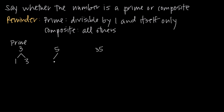What about 5? Well, we know 1 goes into 5 evenly — 1 will always go into every number evenly. We also know that 5 will go into 5 evenly, since the number itself always goes in evenly. But any numbers greater than 5 will always give a decimal answer, and trying to divide 5 by any number between its factors — 2, 3, and 4 — will also give a decimal answer. So there are no positive whole numbers that will go evenly into 5 other than 1 and 5, which means that 5 is also a prime number.